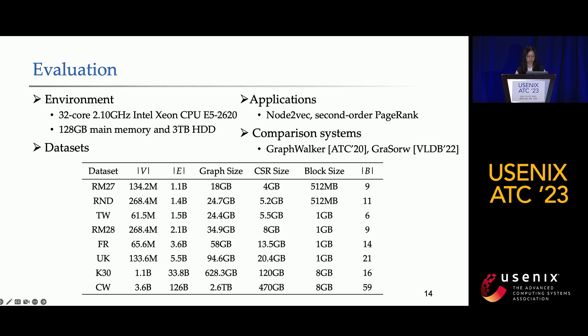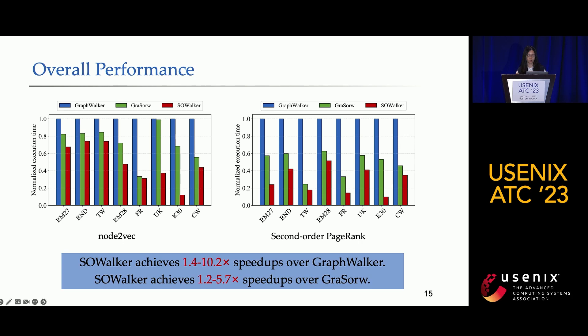Now we present the results of our experiments. We use two representative second-order random walk-based algorithms to study the performance of SOWorker, and we compare it with two state-of-the-art systems, GraphWorker and Grisor. The two figures show execution time normalized to GraphWorker. SOWorker is faster than both GraphWorker and Grisor in all cases. Specifically, SOWorker achieves up to 10x speedup over GraphWorker and up to 5.7x speedup over Grisor.